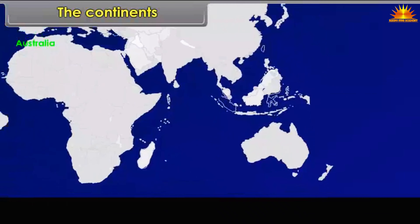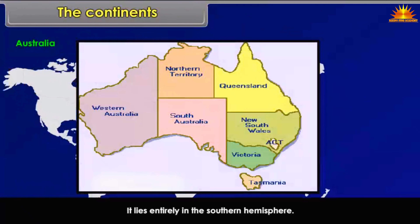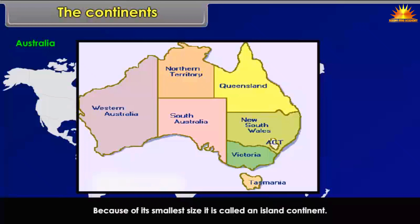Australia is the smallest continent in the world. It lies entirely in the southern hemisphere and is surrounded on all sides by oceans and seas. Because of its smallest size, it is called an island continent.